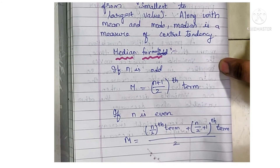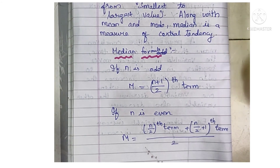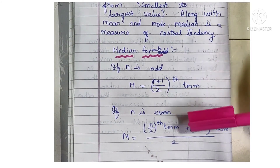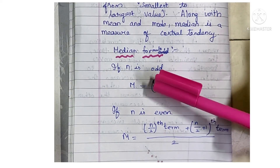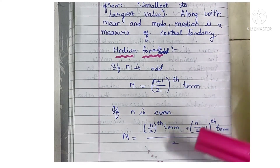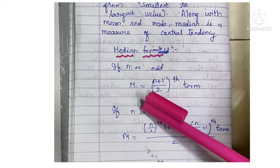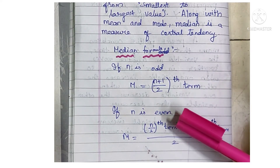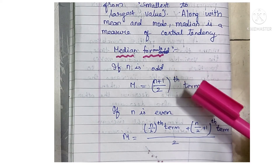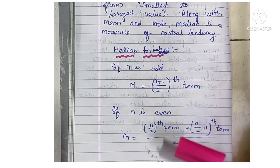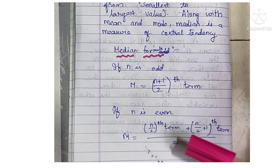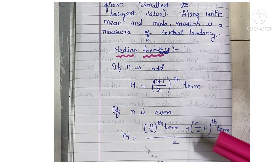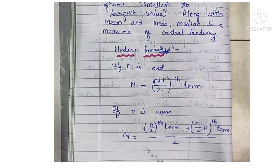There are two formulas for median. If n is odd, use: Median (M) = (n + 1) / 2 th term. If n is even, use: Median (M) = [ (n/2)th term + (n/2 + 1)th term ] / 2.